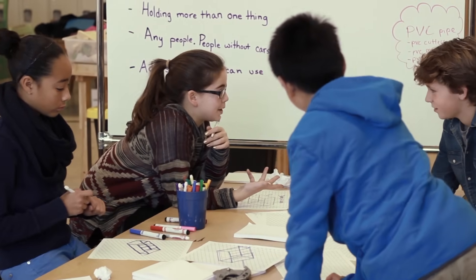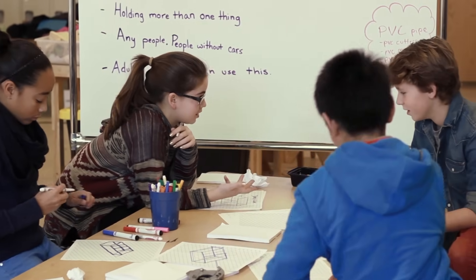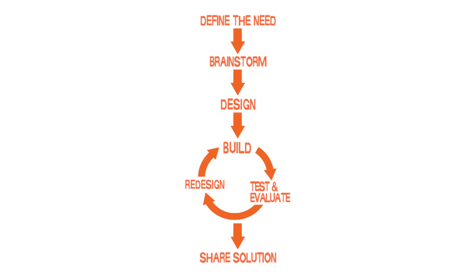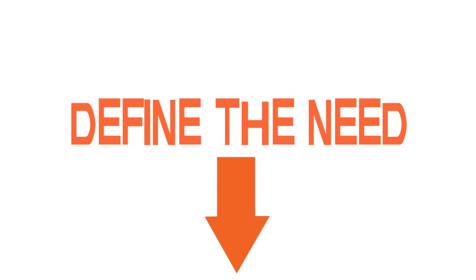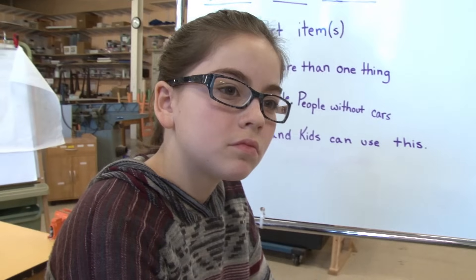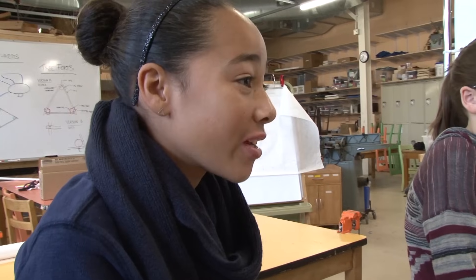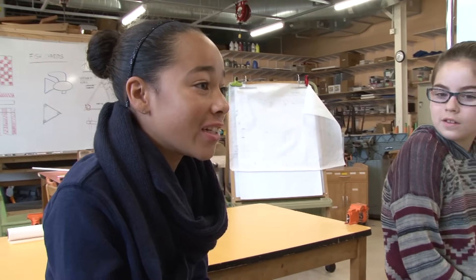Acera is a school where kids can work with their hands to solve problems. The first step in the design process is to define the need. You're at the grocery store and you're biking, and it's really hard to hold your groceries because you're doing this. So you have to use something that will make it easy to have it in the back. I guess we could put the groceries in a trailer?